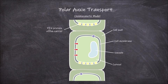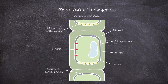Another type of membrane protein important in this model are the auxin influx carrier proteins. A third type of membrane protein, hydrogen ATPase, is another important membrane protein in this model. They function in pumping hydrogen across the cell membrane.